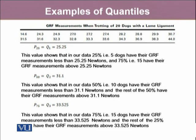And similarly, for the third quartile, which is P75, it is 33.525, which shows that in our data 75 percent, which is 15 out of 20 dogs, have their GRF measurements less than 33.525 Newtons, and the rest of the 25 percent have their GRF measurements above 33.525 Newtons.